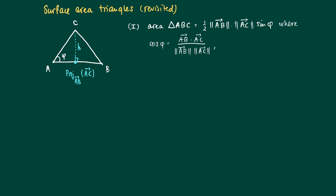So if we have the coordinates of A, B, and C, then this is something we can calculate. We may use the expression sine squared plus cosine squared equals 1, and the fact that sine of phi, for any angle, is at least 0, to calculate the expression above.